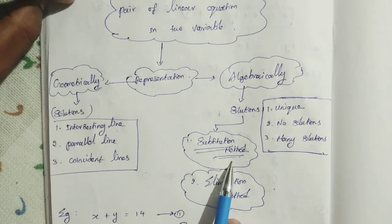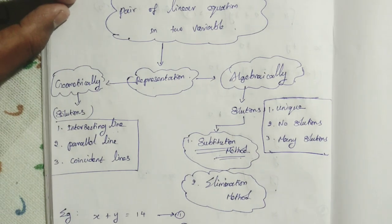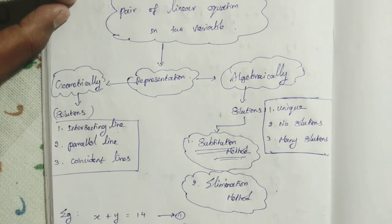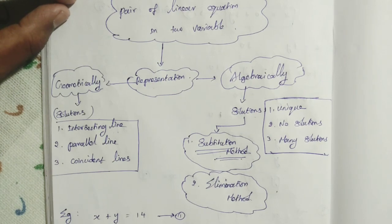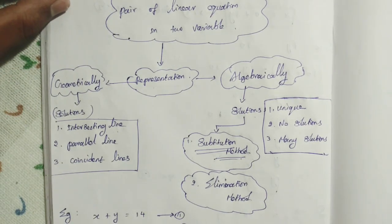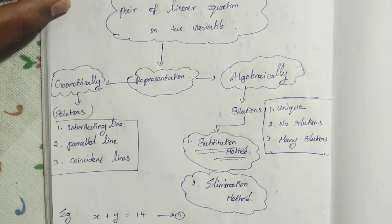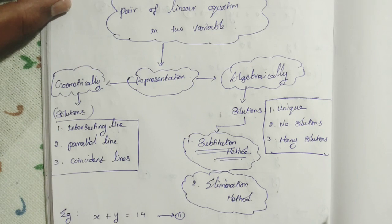I hope you all know about the substitution method. Given the pair of linear equations, from one equation you find x in terms of y and mark it as equation number 3. Then substitute equation 3 into equation 2 to find the y value. After finding the y value, use it in equation 3 to find the x value. If we can find x and y values, that is a unique solution. If the statement is true, that is many solutions. If the statement is false, that is no solution.